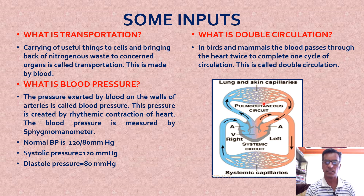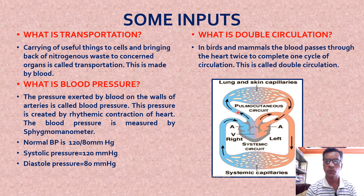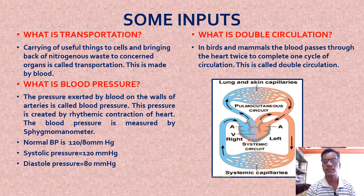To explain double circulation with an example: deoxygenated blood from different organs enters the heart for the first time. The same blood then moves to the lungs for exchange of gases to get oxygen. Now that same oxygenated blood enters the heart for the second time. So the same sample of blood enters the human heart two times - twice - and that is why it is called double circulation.